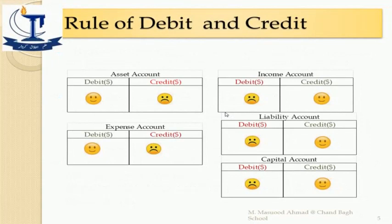Here is the rule of debit and credit. On the left side we can see a ledger made for assets and expenses. Whenever assets and expenses increase in your business, you place the amount on their debit side. Whenever they decrease, you place the amount on the credit side. So assets and expenses belong to the same family.